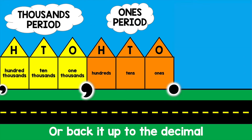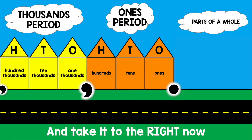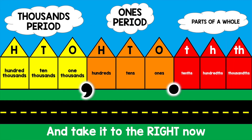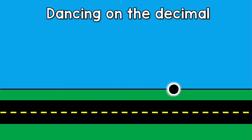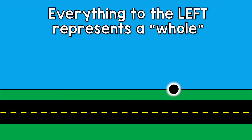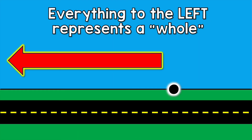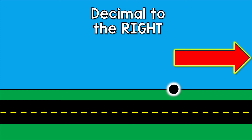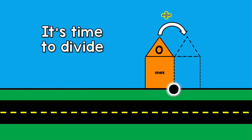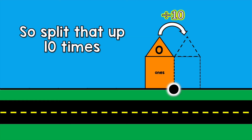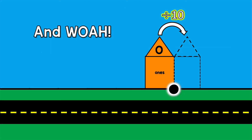But back it up to the decimal and take it to the right now. Tens, hundreds, thousands — here we go again! Dancing on the decimal, everything to the left represents a whole. Decimal to the right, it's time to divide, so split that up ten times.